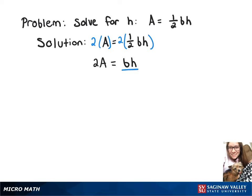Now we'll divide both sides by b, and that leaves us with 2a over b equals h.